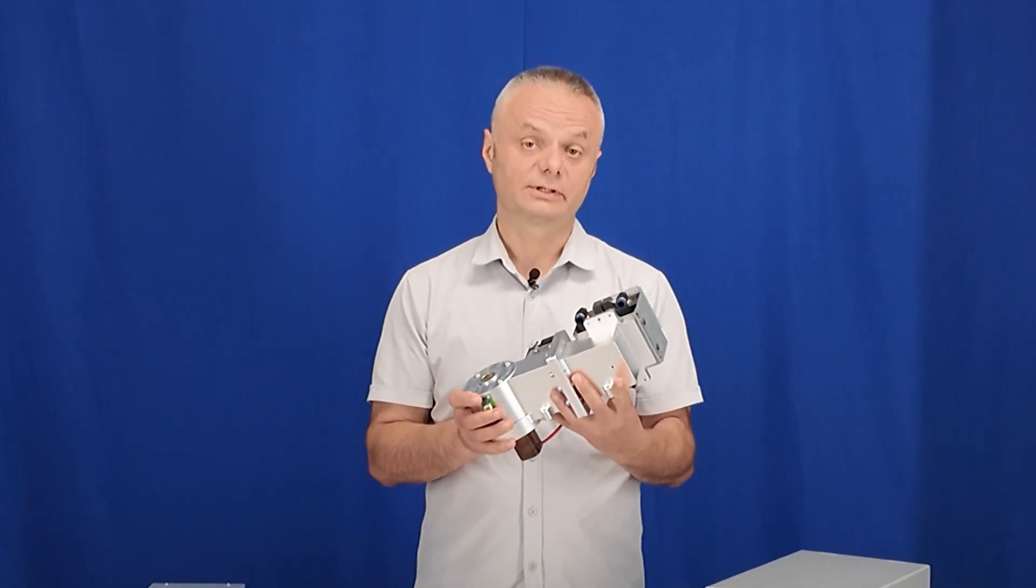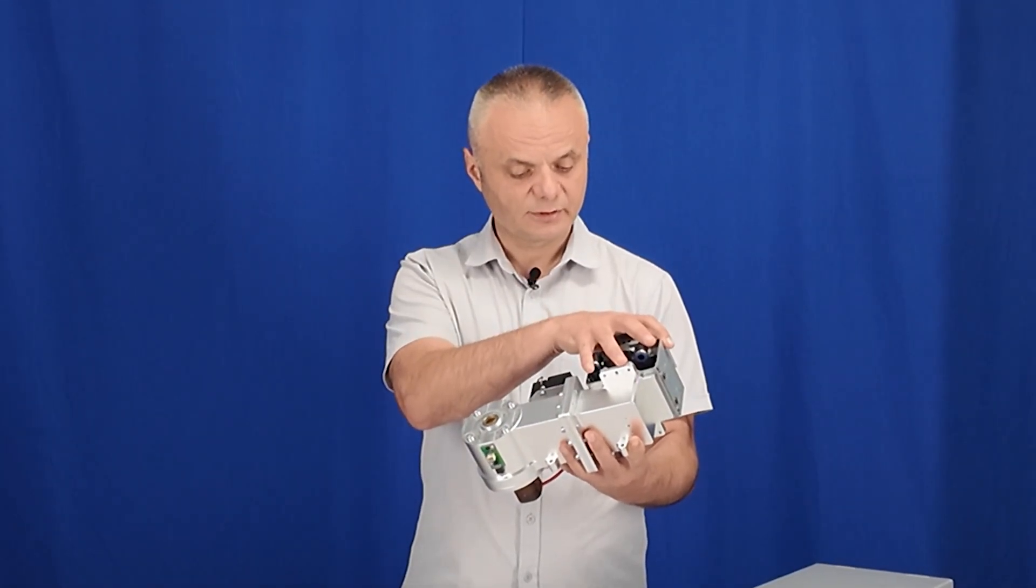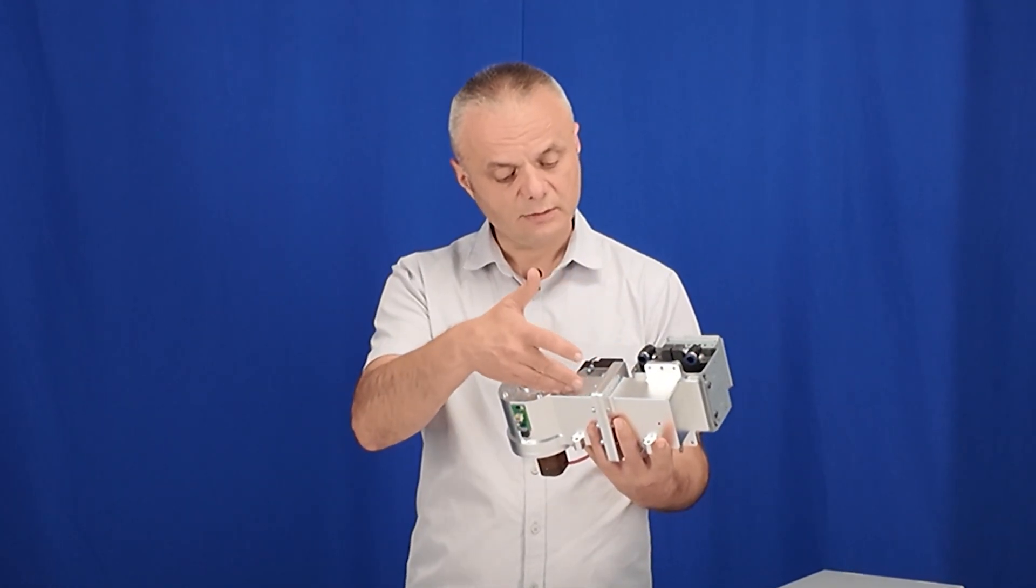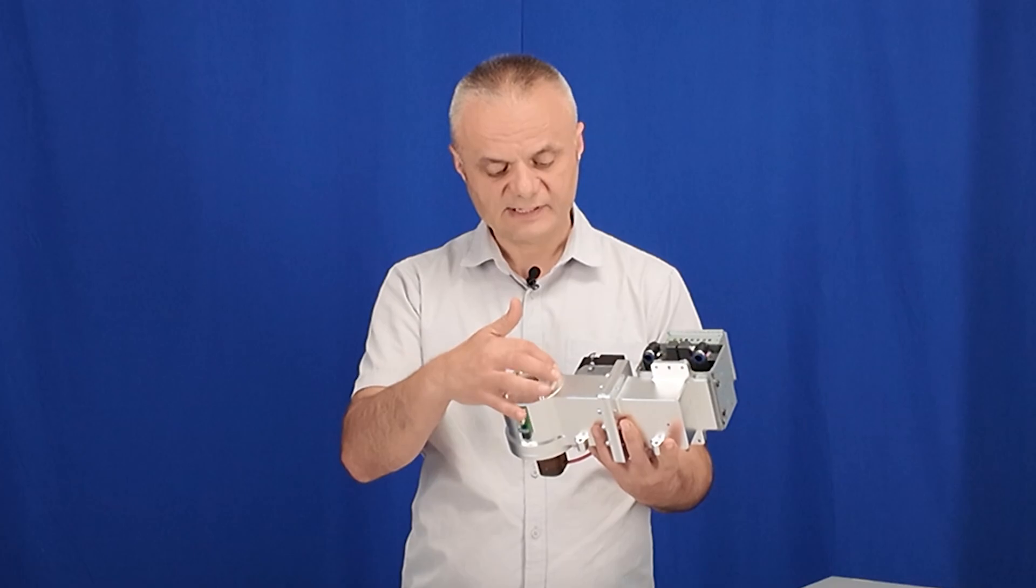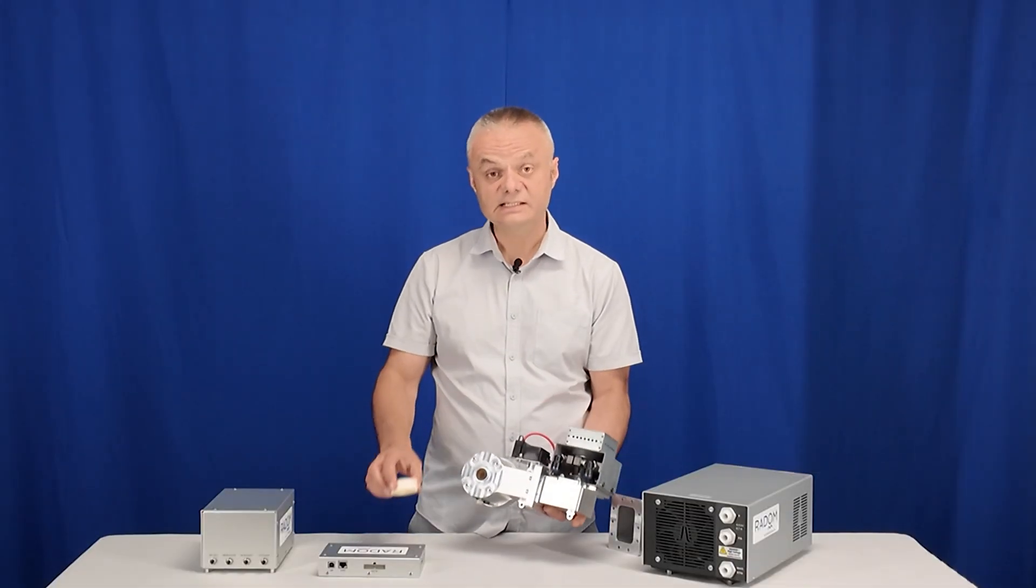So how does this work? The microwave energy which is produced by the magnetron over here is funneled down the waveguide into this resonant cavity which contains one of these. This is a CeraWave ring made out of special type of ceramic with extremely low losses.